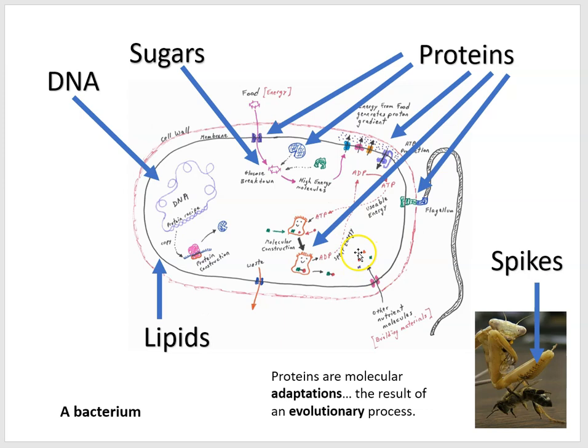These proteins do different jobs. Some are involved in harnessing energy from the environment. Some build molecules that cells are made of. Others are involved in building DNA and using DNA information to build the rest of the cells' proteins. Proteins are the key players for life on Earth, each with different functions.